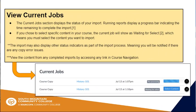Finally, to monitor the migration process, you can view Current Jobs to see if your course was copied over with or without errors. The Current Jobs section displays the status of your import. Running Reports displays a progress bar indicating the time remaining to complete the import. If you had chosen to select specific content, the Current Job will show as Waiting for Select — this is when you select the content you want to import. The import may also display other status indicators as part of the import process.